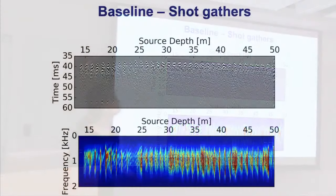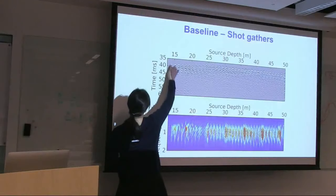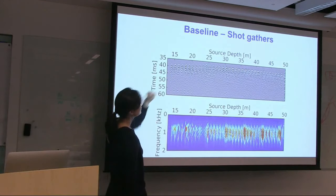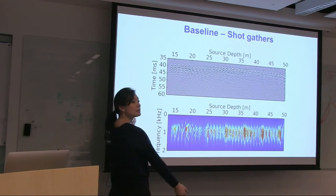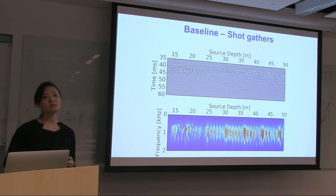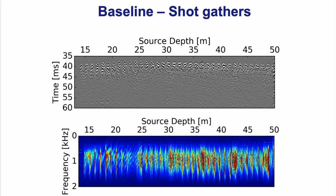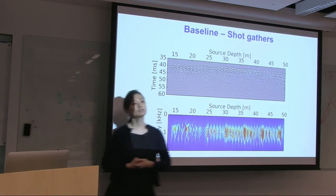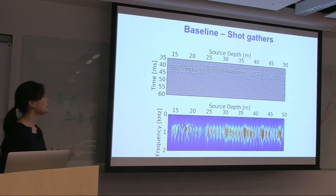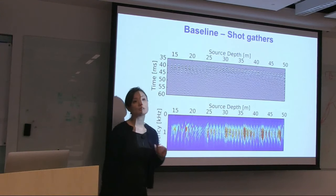Looking at the shot gather data: one panel shows a particular source and all receivers. For example, source at 30 meters with the full receiver depth range, then source at 40 meters with the same. The data is very clean — first arrivals are clearly visible with almost no pre-arrival noise. The waveforms are complex, showing refractions and reflections that are clearly identifiable. The frequency spectrum runs from 500 Hz to 1.5 kHz.